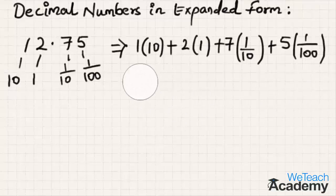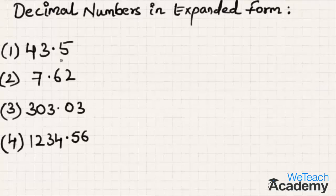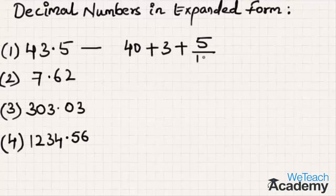Now using the same concept, let us try a few more examples. The first example is 43.5. In the whole number part, 4 is in the tens place giving us 40, plus 3 in the units place giving 3, plus 5 in the tenths place which becomes 5 by 10. So this is the expanded form of 43.5.